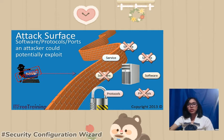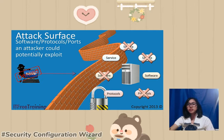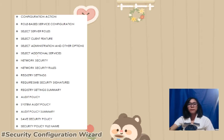The Security Configuration Wizard has a firewall configured on it. It allows administrators to customize network security policies, audit policies, registry values, and services. It also corresponds to three main components: the command line interface, a wizard interface, and a security configuration database.